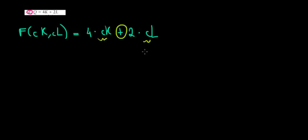This is the regular function. Let's see what happens if we have an increase of the proportion C in capital and labor, so CK and CL. We would have 4 times CK plus 2 times CL. Now what we have is an addition of two terms with the common factor C.